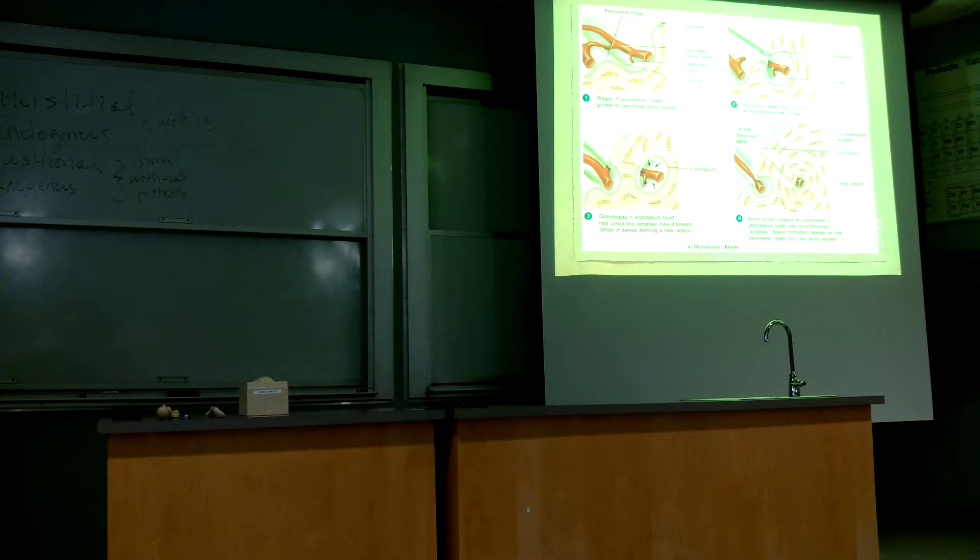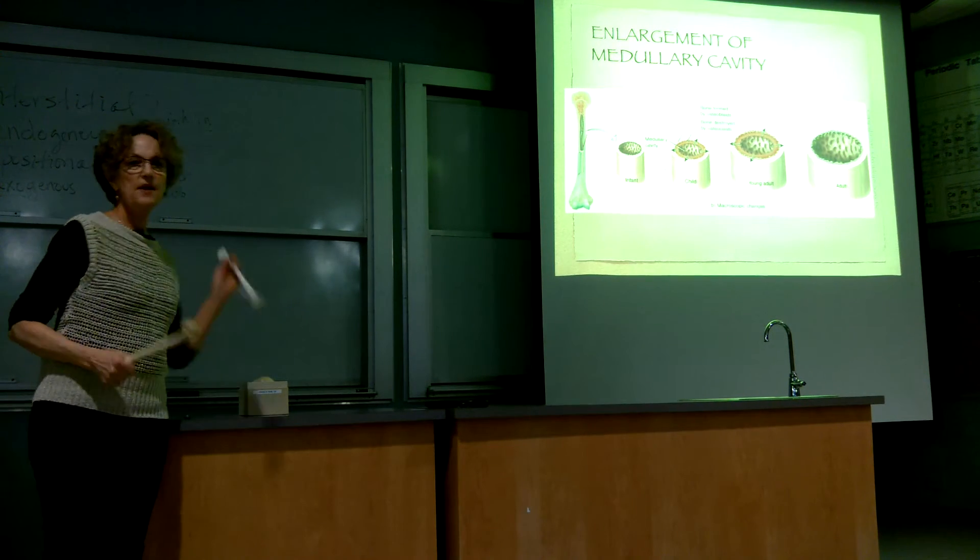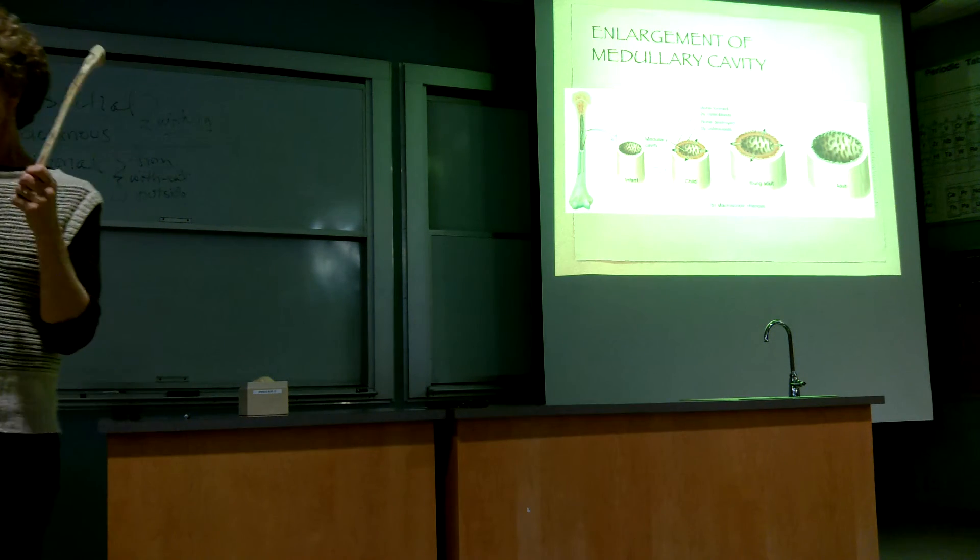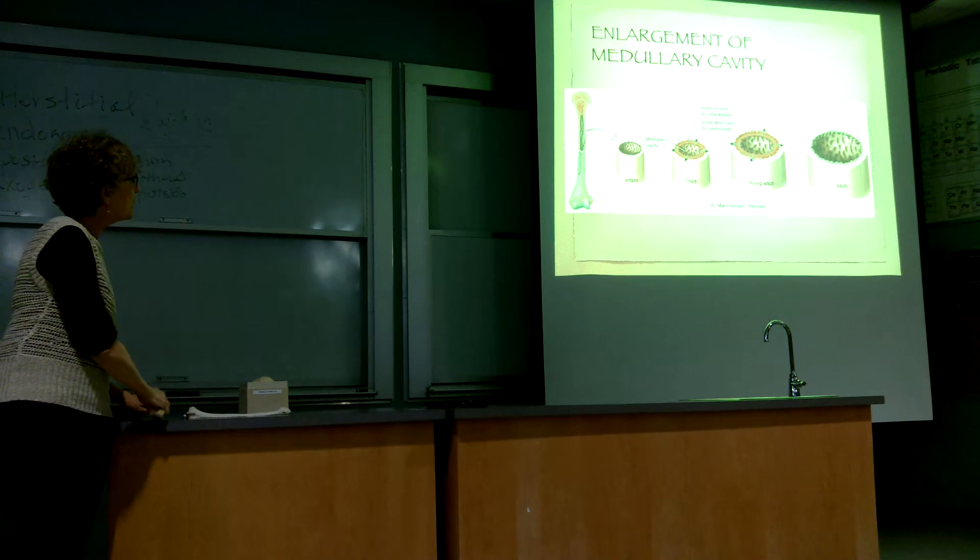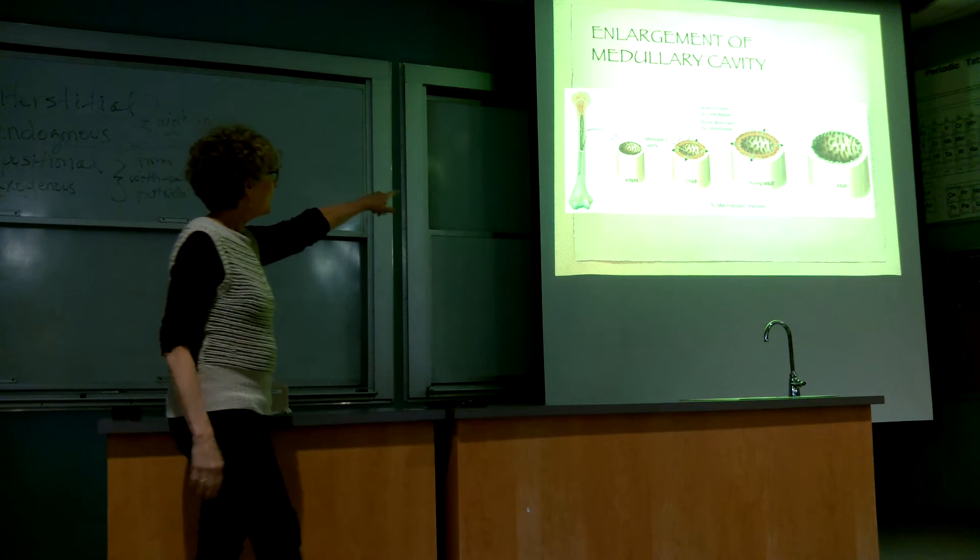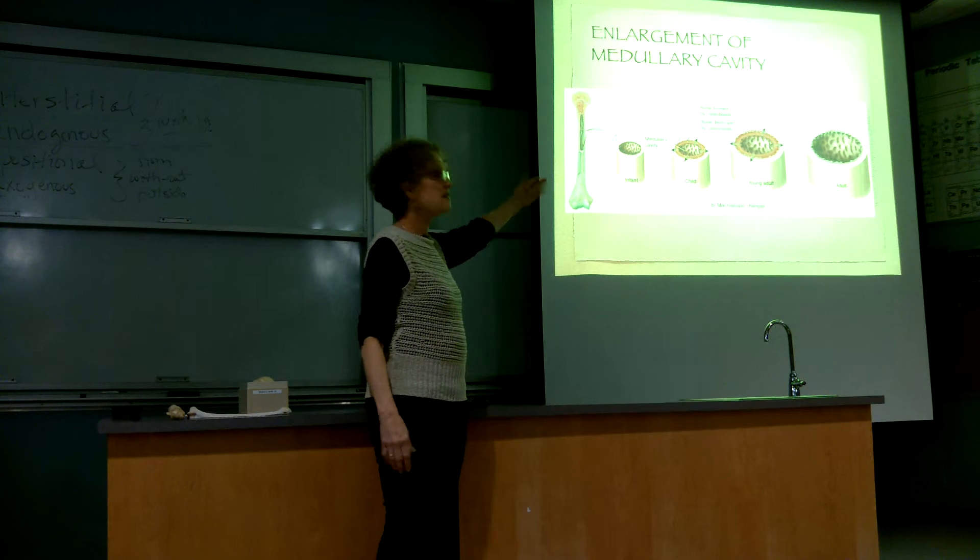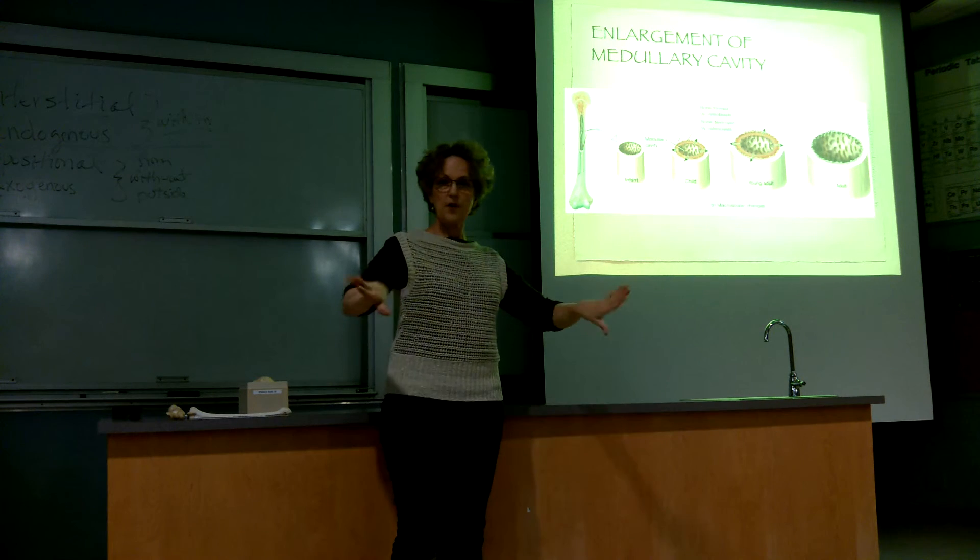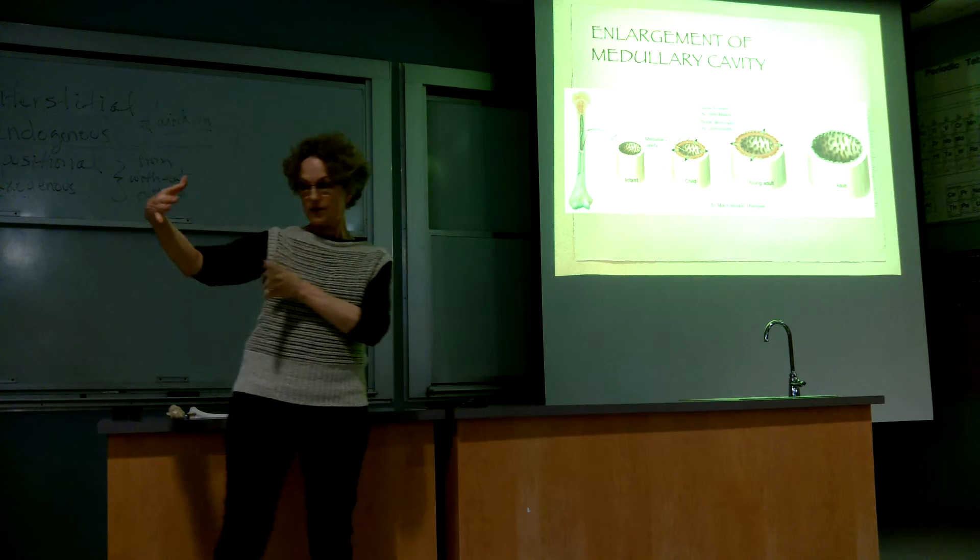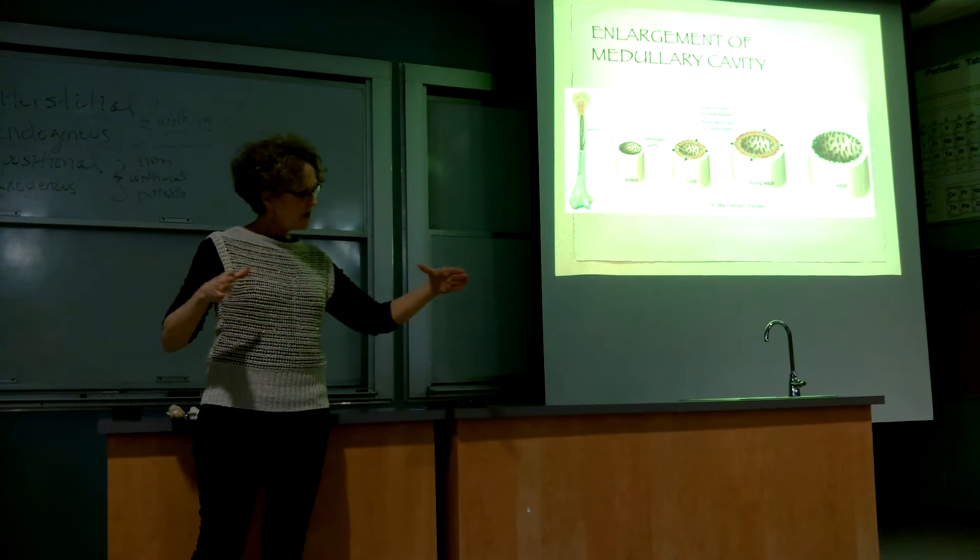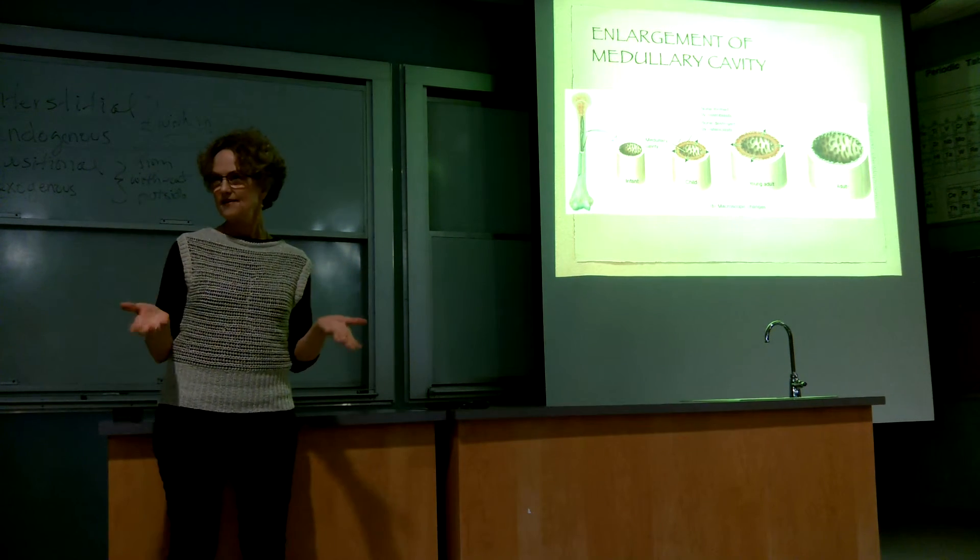Okay, now, so now we have this bigger bone, but what happened to the medullary cavity? Did the medullary cavity stay really tiny? No, it's gotta keep up with the bone growth here. And so what happens here is the enlargement happens by osteoblasts and osteoclasts. So the osteoclasts are destroying the bone, or resorbing the bone, and then the osteoblasts are forming, like we just saw, this appositional growth. And then the medullary cavity is keeping up, keeping the bone at a consistent thickness. Does this make sense?